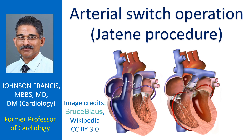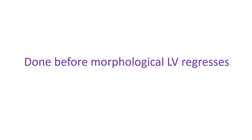The two coronary arteries with a piece of aortic wall attached were transposed to the pulmonary artery. Aortic openings were closed with a patch. The aorta and pulmonary artery were transected, contraposed, and anastomosed. The ventricular septal defect was closed with a patch.